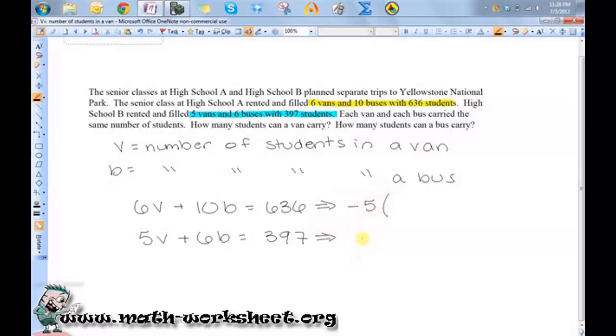Now, it doesn't matter which one of these I made positive and which one I made negative. I just decided to make the top one negative. And you've got to make sure you multiply both sides of the equation by that number, by negative 5. So 5v plus 6b equals 6 times 397.